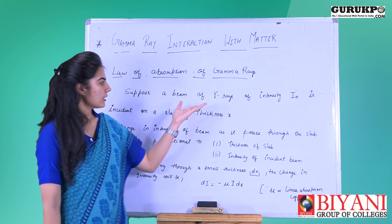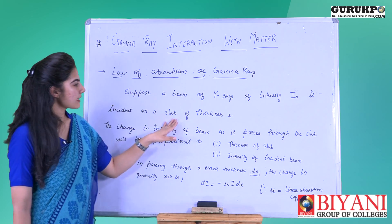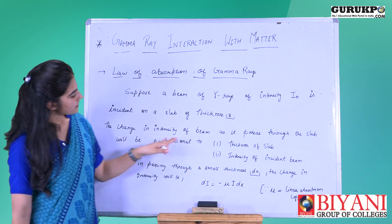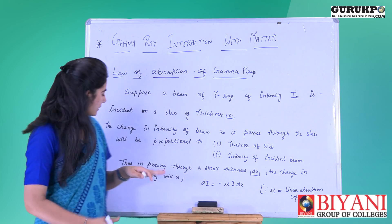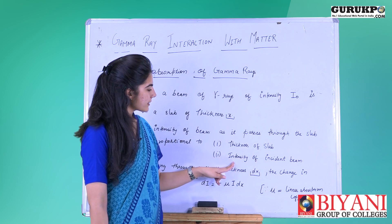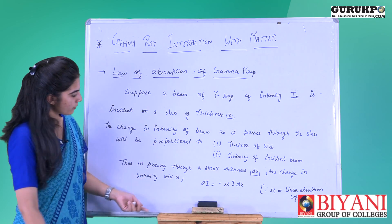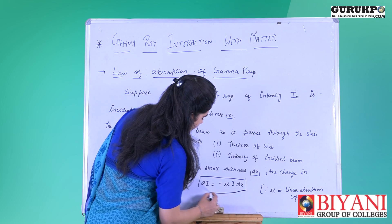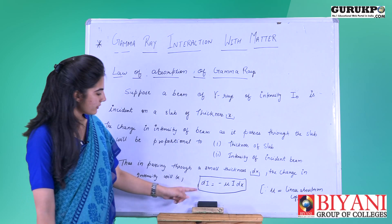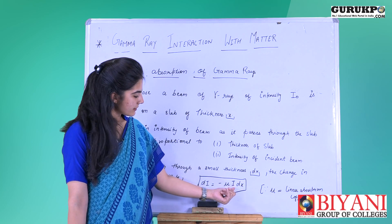Let us suppose a gamma ray of intensity I₀ is incident on a slab of thickness x. The change in intensity of the beam as it passes through the slab will be proportional to two things: first, the thickness of the slab, and second, the intensity of the incident beam. In mathematical form, for a small thickness dx, the change in intensity is given as dI is directly proportional to I dx.